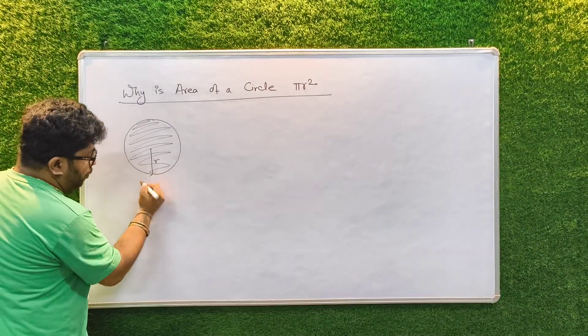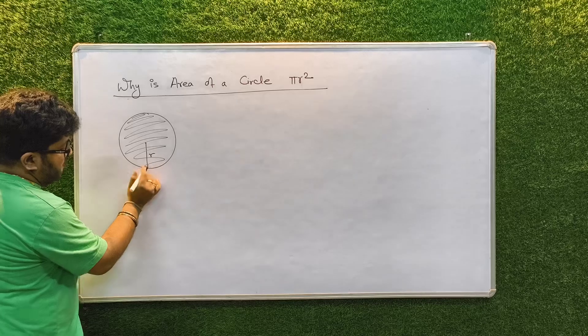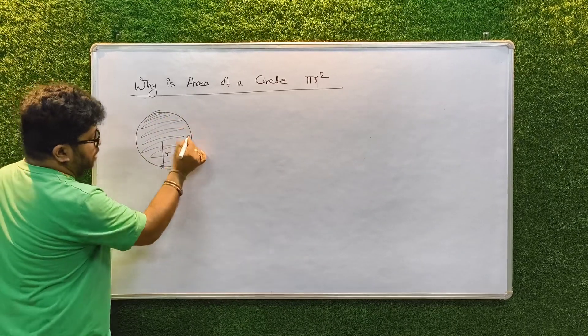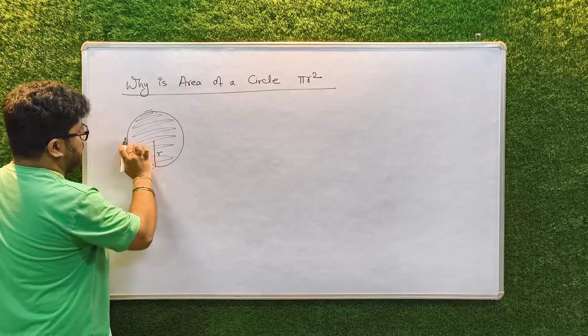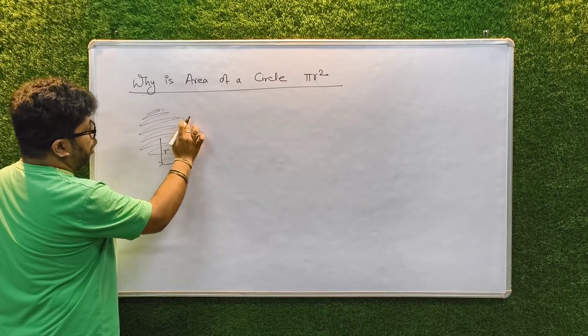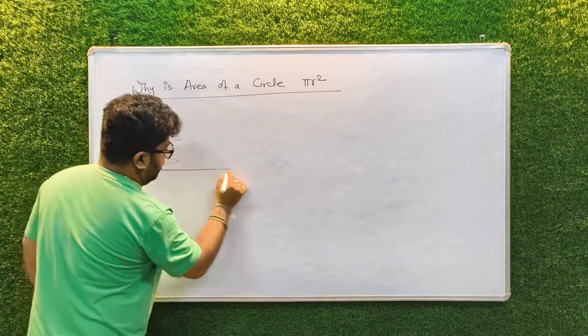Let us imagine we open this circle from this point and the perimeter of this circle or the circumference of this circle opens up like this and falls straight like this.